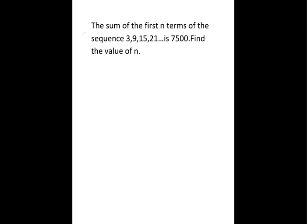The sum of the first n terms of the sequence 3, 9, 15, 21 is 7,500. We are supposed to find the value of n.